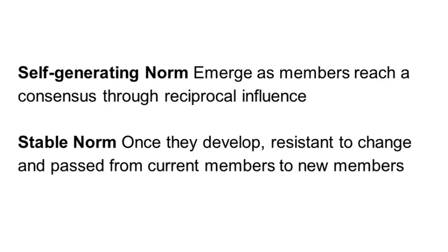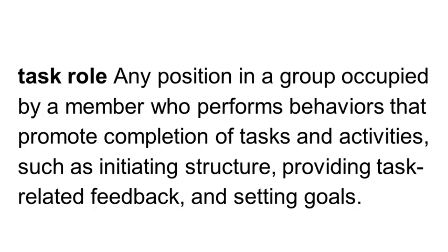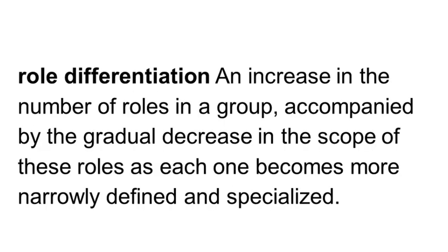What kinds of roles are common in groups, and how do they influence members? Roles specify the types of behaviors expected of individuals who occupy particular positions within the group. As members interact with one another, their role-related activities become patterned through role differentiation, with task roles pertaining to the work of the group and relationship roles pertaining to maintaining relations among members. The same person rarely holds both the task role and the relationship role in the group.